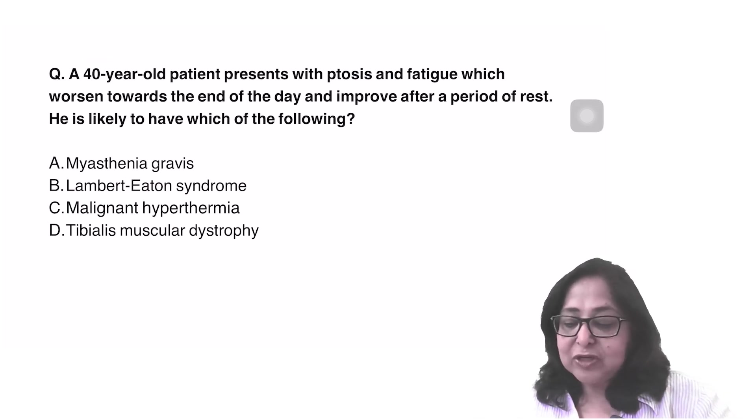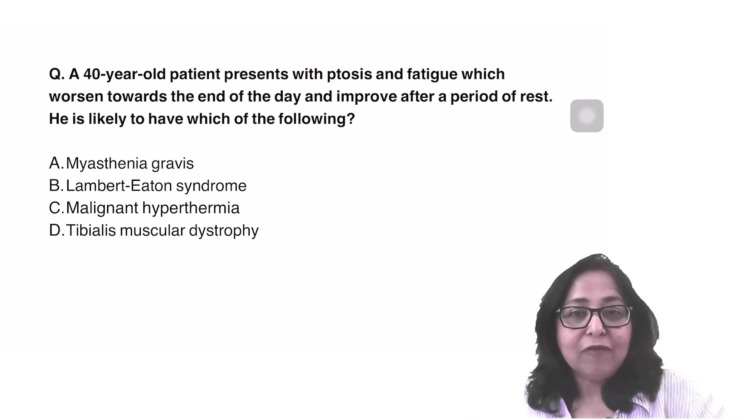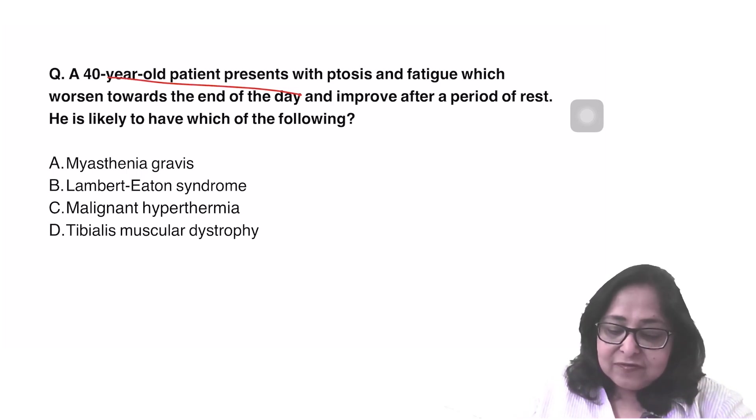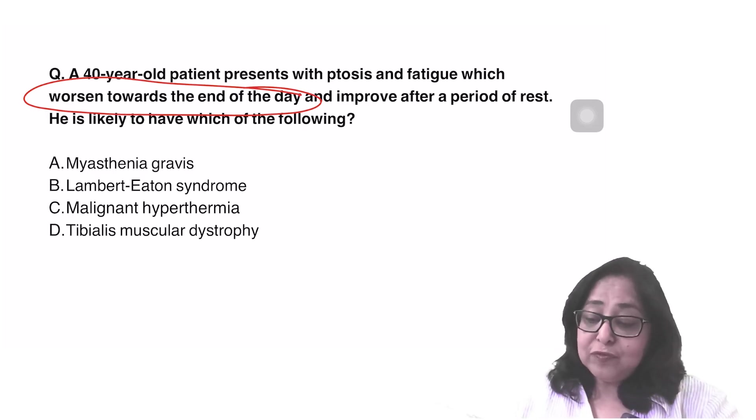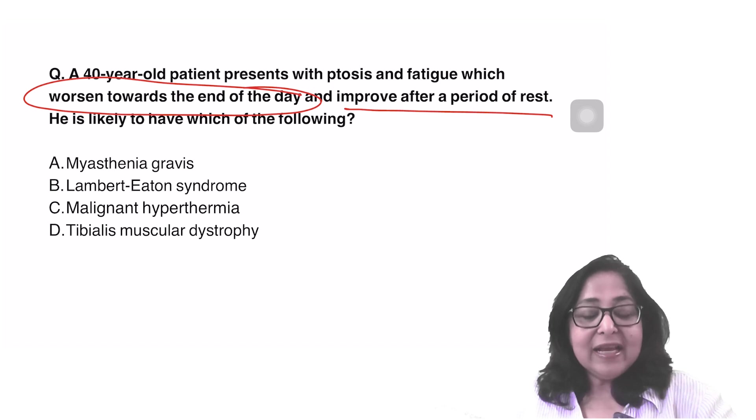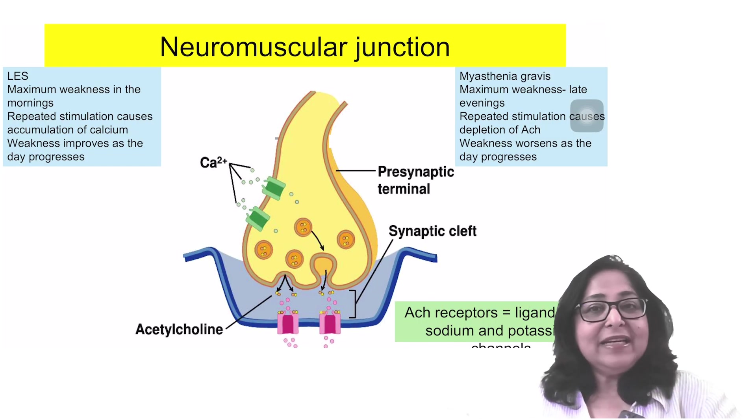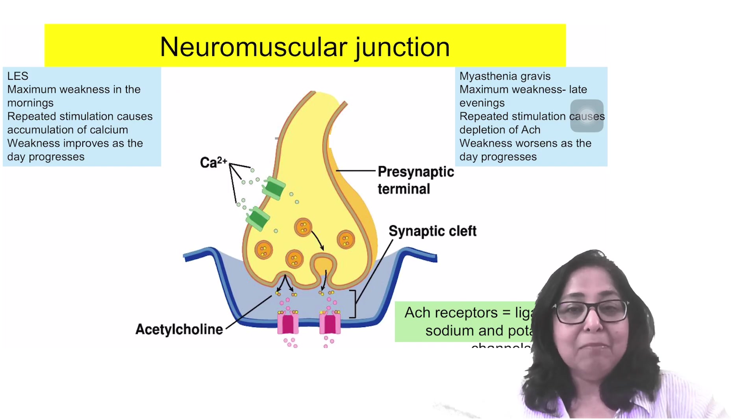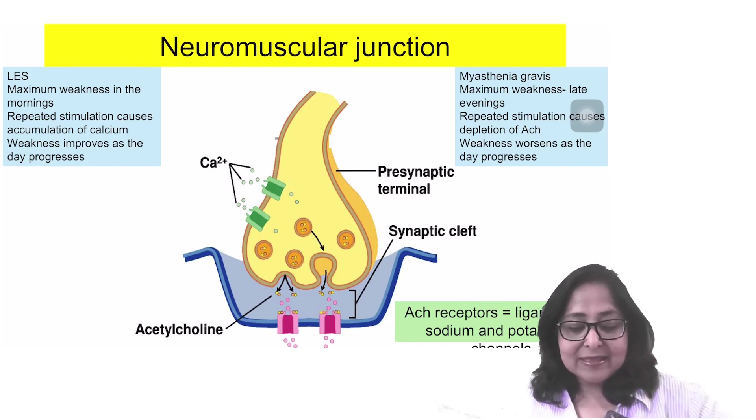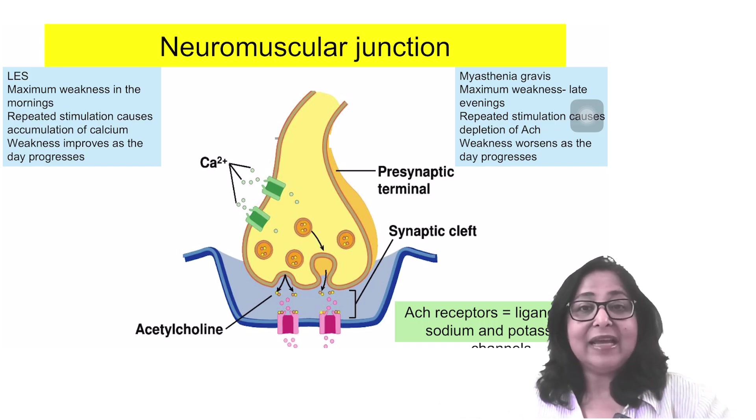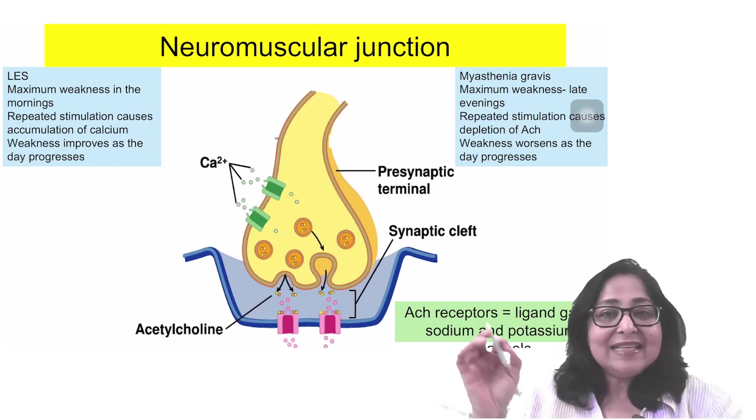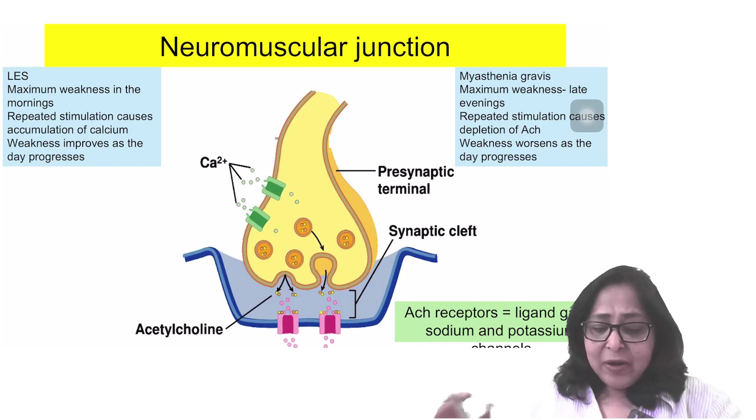Let's have a look at the next question. It says a 40-year-old patient presents with ptosis and fatigue which worsens towards the end of the day. So this is a very big hint. It is worsening towards the end of the day and it improves after a period of rest. He is likely to have which of the following? Is it going to be myasthenia gravis or is it going to be Lambert-Eaton syndrome? These are two clinical conditions which present with muscle weakness, but there is a very characteristic history.